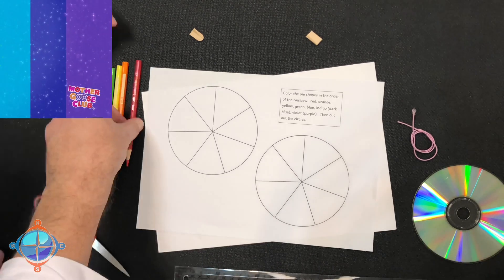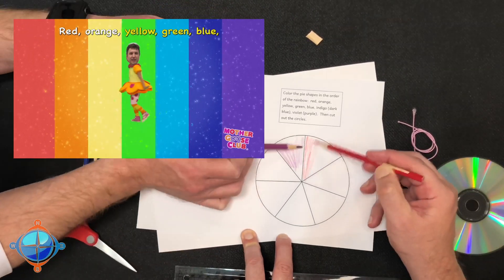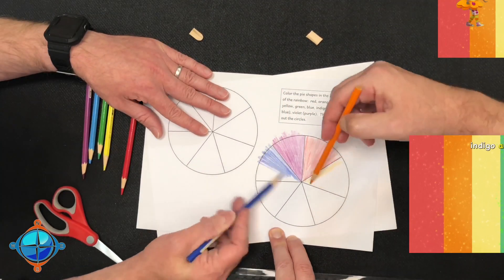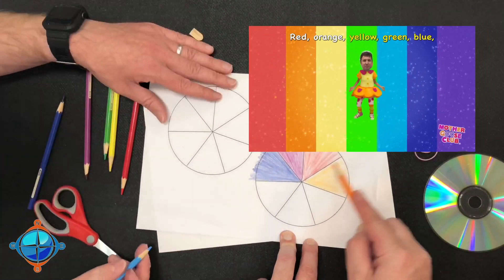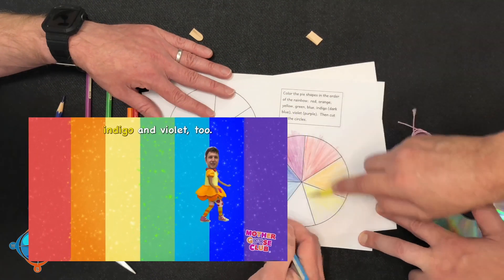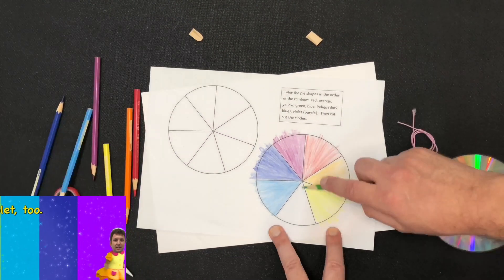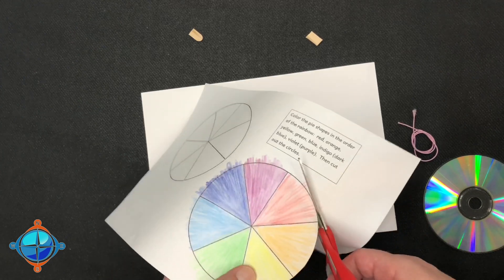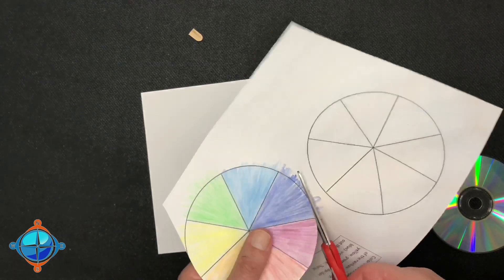Just like this: red, orange, yellow, green, blue, indigo. Red, orange, yellow, green, blue, indigo.